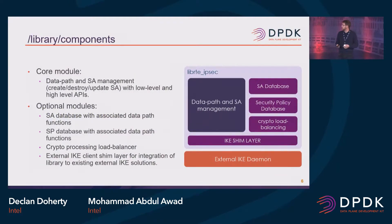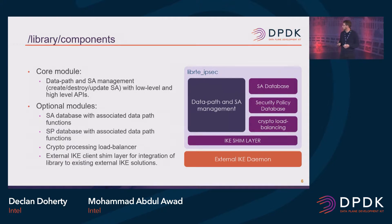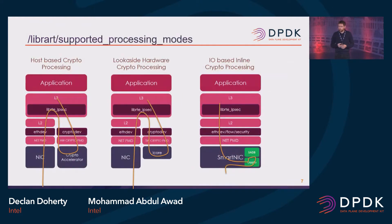The library architecture: these are the modules - the core data path and SA management, and then ancillary modules with a shim layer to link to an external daemon. The idea is that you can pick up and use any of these as you need. Initially we're looking at supporting three crypto processing models.